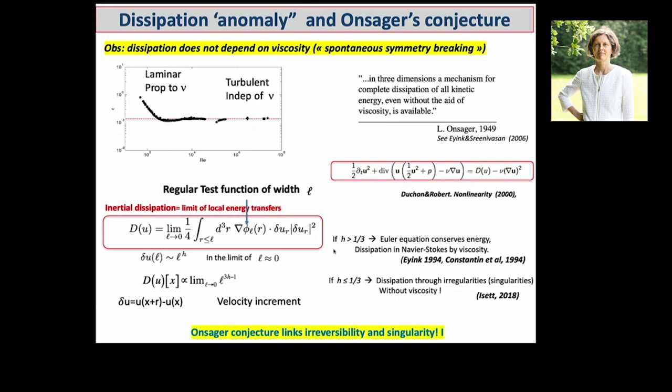The first person who got excited about this was Lars Onsager in 1949 — the same person who computed the exponent of the Ising model, where you have spontaneous symmetry breaking by reversing spin up and down. Onsager understood it was something special. He said in a letter: 'In three dimensions, there is a mechanism for complete dissipation of all kinetic energy even without the aid of viscosity.' At the time, nobody in front of that assembly of eminent turbulence scientists understood what he meant. He was 50 years in advance.